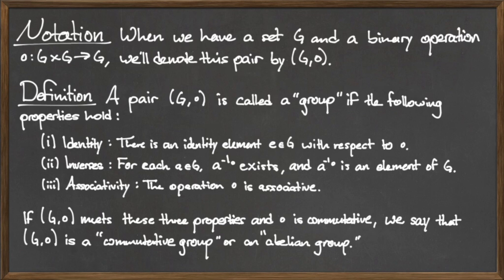Additionally, any group that also satisfies the property that the binary operation dot is commutative is called a commutative group, or an abelian group.